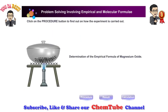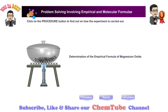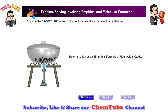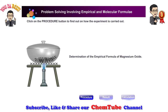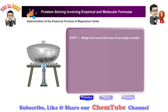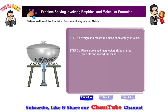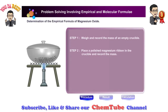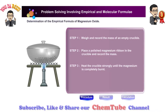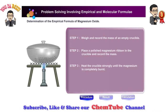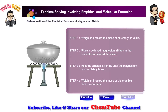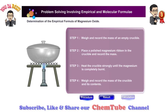Let us now see how we can determine the empirical formula experimentally. Click on the procedure button to find out how the experiment is carried out. Step 1: Weigh and record the mass of an empty crucible. Place a polished magnesium ribbon in the crucible and record the mass. Heat the crucible strongly until the magnesium is completely burnt. Weigh and record the mass of the crucible and its contents.